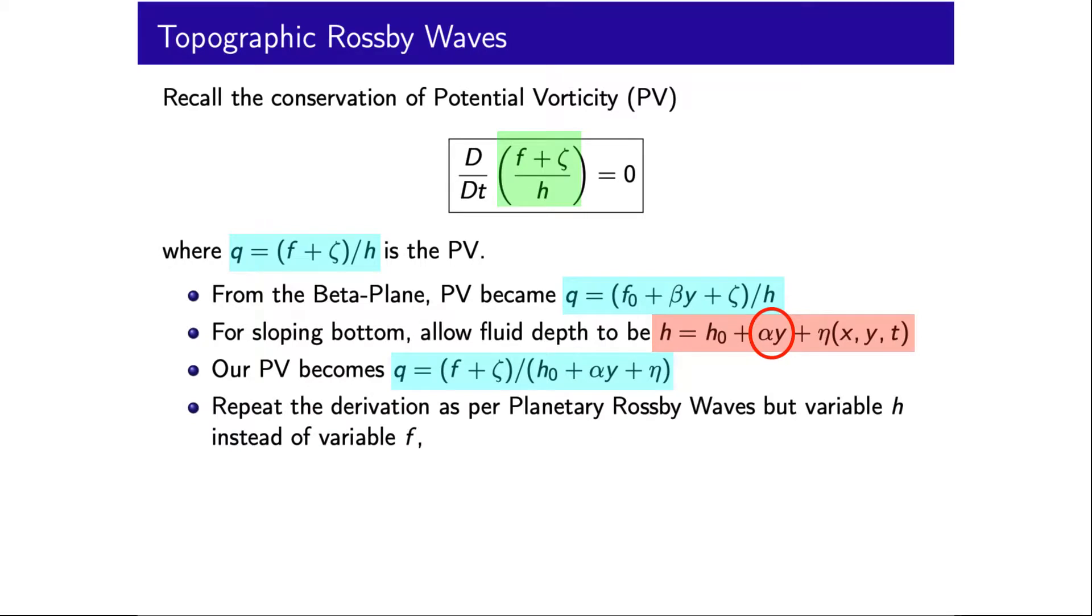We can then repeat the same derivation procedure as for the planetary Rossby waves, except with this y α term representing our variable depth, and return the topographic Rossby wave equation as the rate of change of the free surface minus the Rossby radius squared times the rate of change of the Laplacian of η plus our topographic slope term α times gravity on f times the x gradient of η. Remember here that the x direction is perpendicular to the topographic slope, which we have chosen as the y direction, and that the Rossby radius is the square root of gH on f.